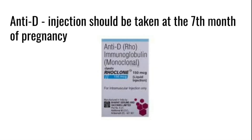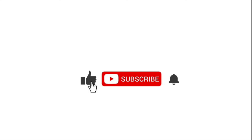And how to prevent this? If a mother has a negative blood group, she has to be given an injection called the anti-D injection at the 7th month of her pregnancy. By taking this injection, she can prevent this disease. Thank you.